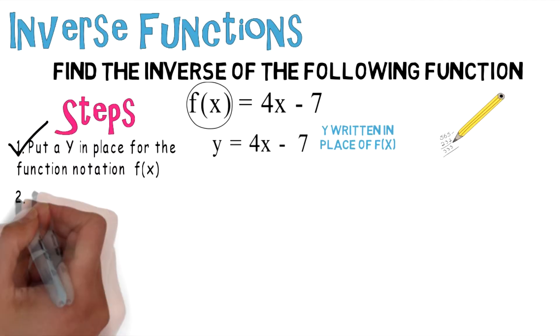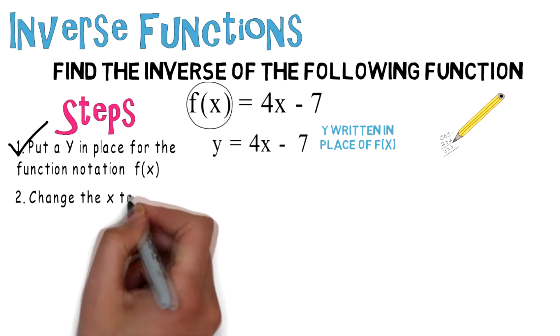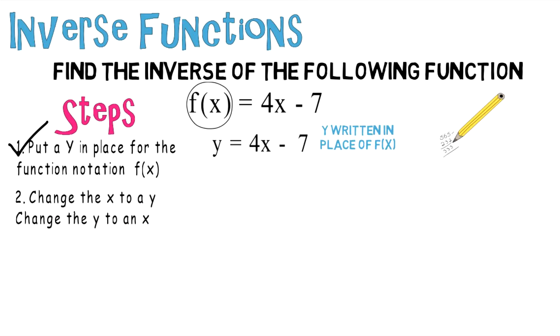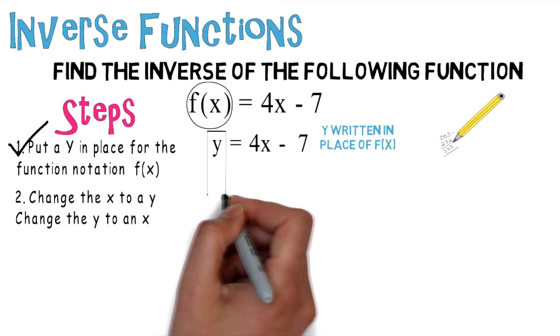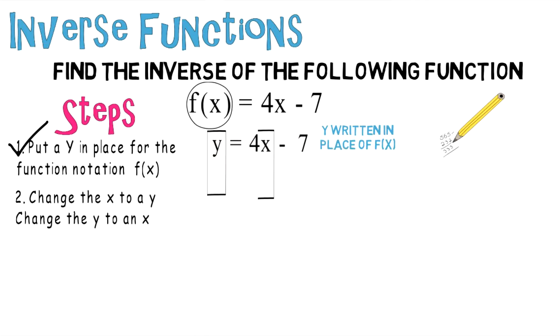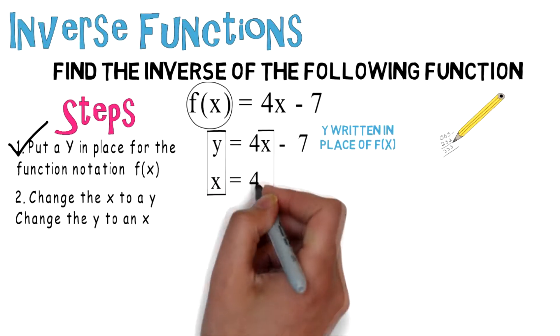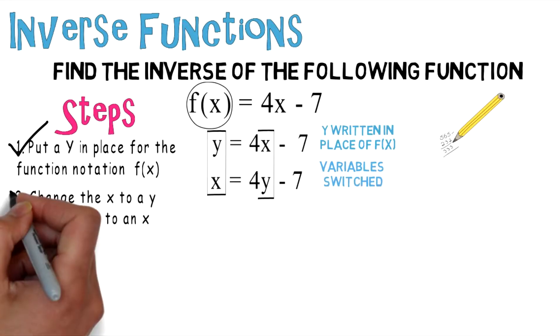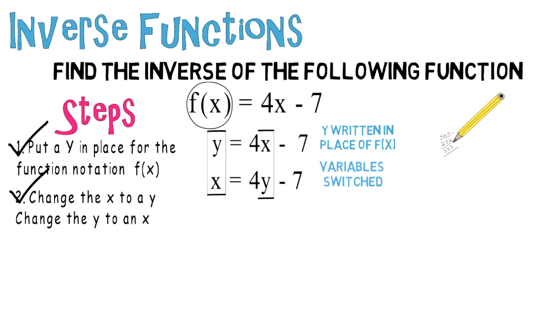Which is change the x to a y and change the y to an x. Moving forward, we're going to take this y and change it to an x, we're going to take this x and change it to a y. So you wind up getting x = 4y - 7, and you should notice that the variables are switched. So now we can check off step number two and move on to step number three.